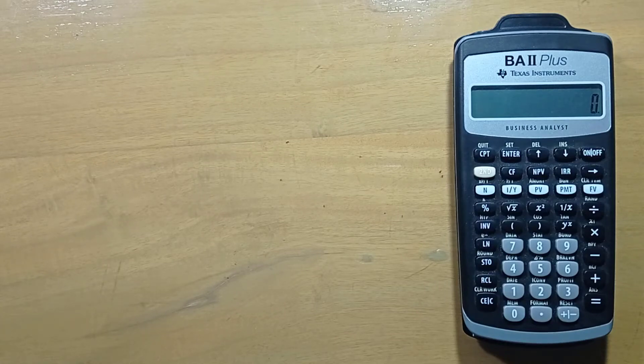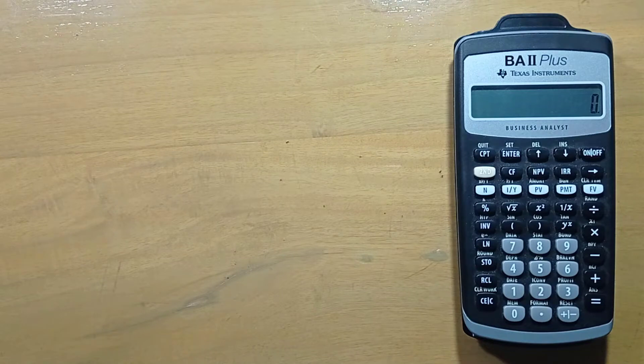Today I am going to show you the calculation of geometric mean in TI BA Plus financial calculator. The geometric mean is the average of a set of products. It is commonly used in calculating the performance result of an investment or portfolio.